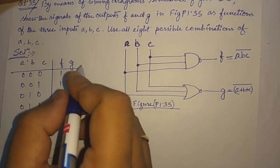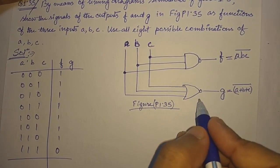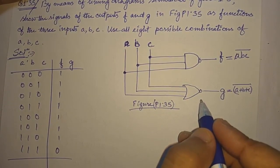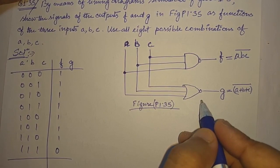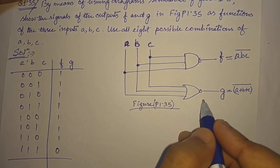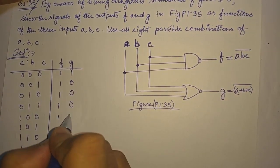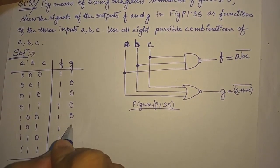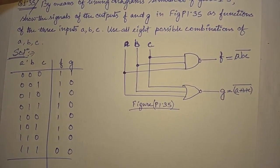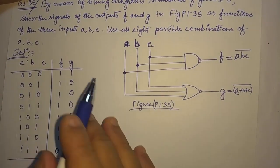Then we have g. In the case of a NOR gate, if any one of the three inputs is 1, the output will be 0. So only when all inputs are 0 will the output be 1. For all remaining seven combinations, g = 0. This is the input-output relationship.